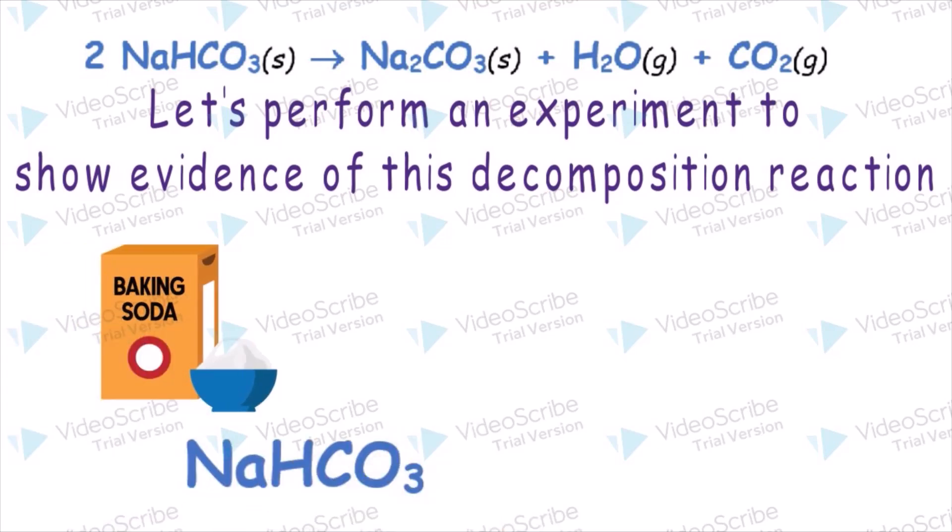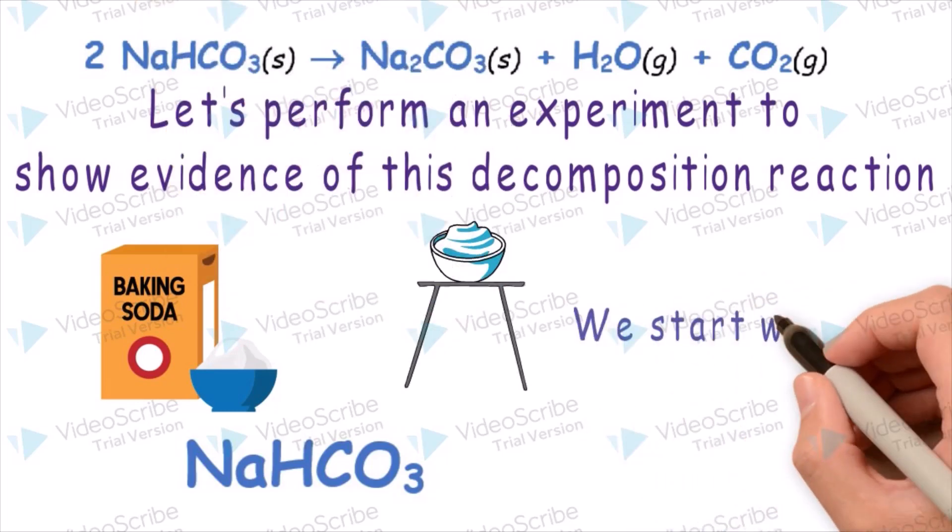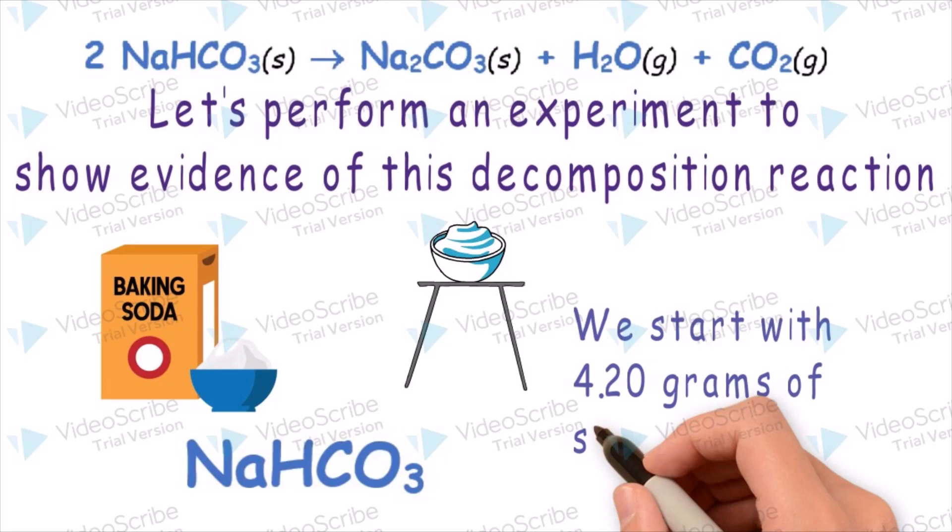We're going to start with baking soda, which is sodium bicarbonate, put it into a dish, and take the mass. We start with 4.20 grams of sodium bicarbonate.